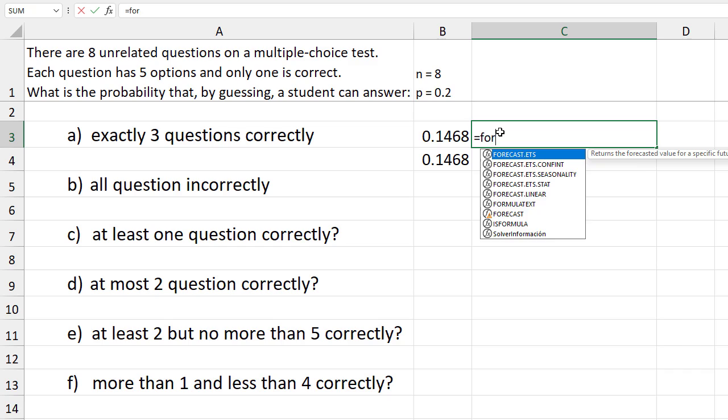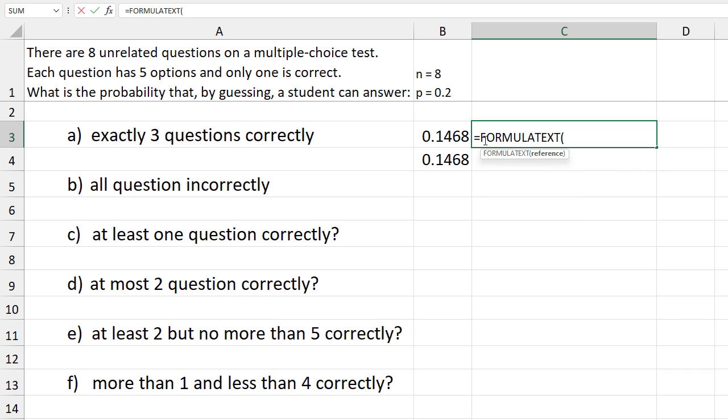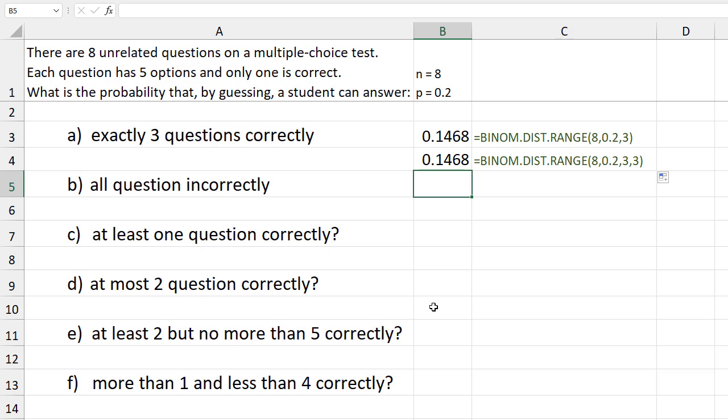I'm going to use equals formula text to show the formula used in those cells here. Color it green and drag it down to the second cell here. For part b, all questions incorrectly means zero successes.